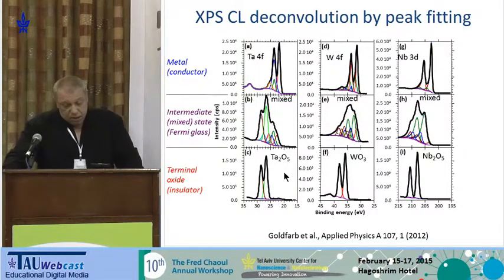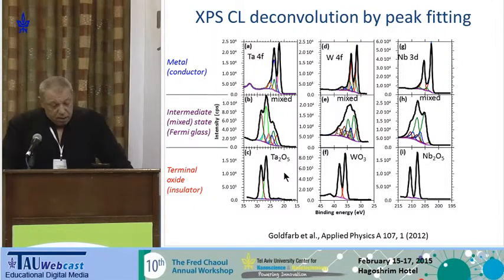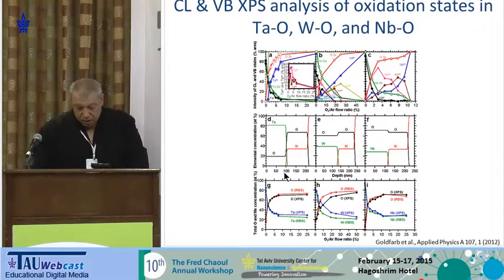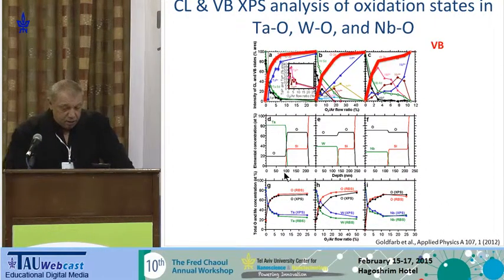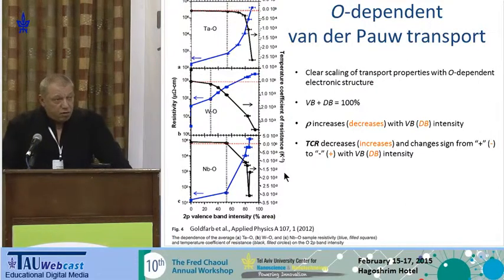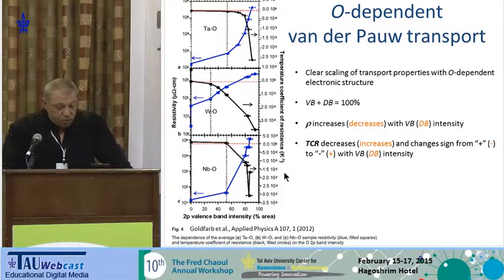We can deconvolute the peaks using peak fitting and get quantitatively the relative amounts of various oxidation states or oxide phases in the film. The upper panel shows pure metals, the lower panel shows terminal oxides, and in between are the intermediate states — the most interesting part. Following oxidation, we see a very nice rise of the valence band and simultaneous reduction of the metallic or defect D band. We then took the samples out of the machine and performed van der Pauw measurements of transport in those layers — specifically resistivity and temperature coefficient of resistance. I decided to scale the transport with the valence band intensity, since the valence band intensity signifies the insulating part of the film, while the D band symbolizes the conducting part.